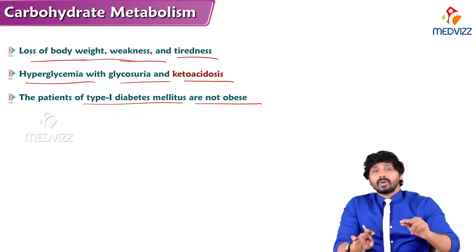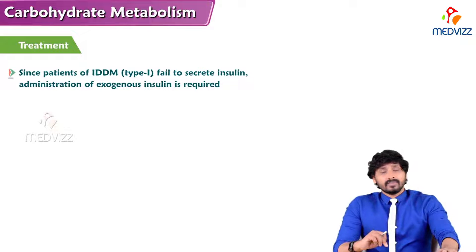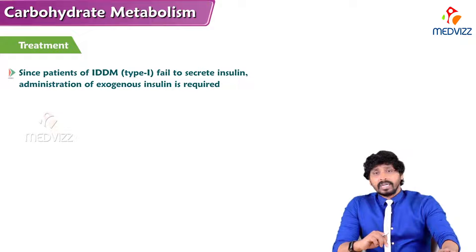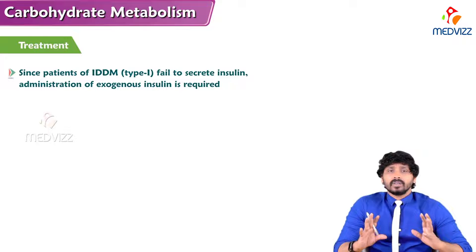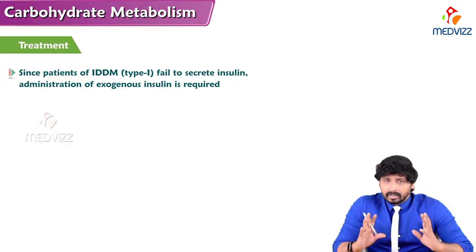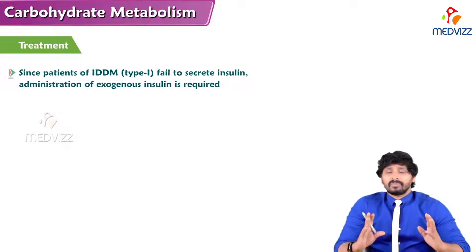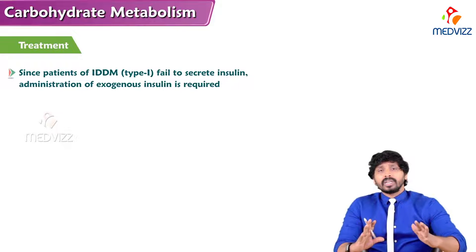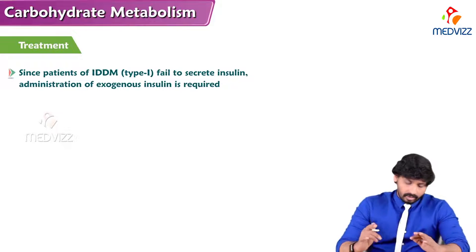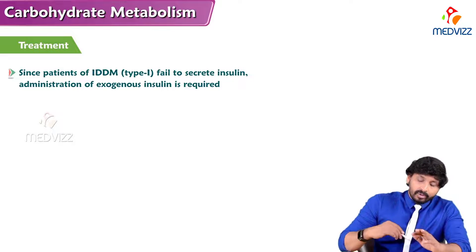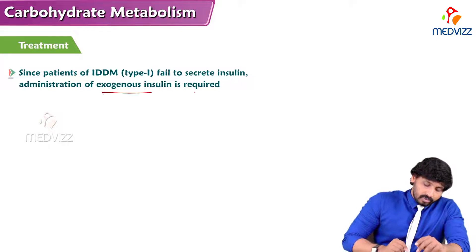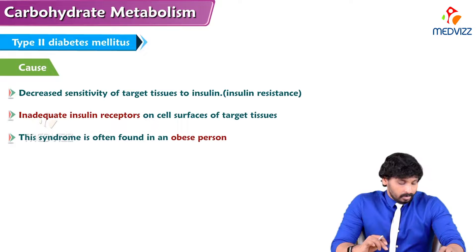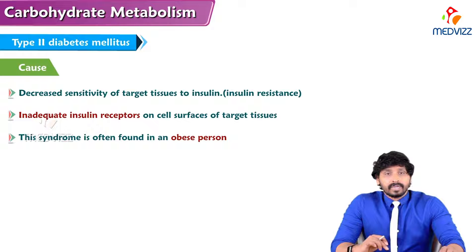Treatment: since Type 1 diabetes is insulin-dependent, persons suffering from Type 1 diabetes mellitus — including juveniles — are absolutely required to take insulin. As they fail to secrete insulin on their own, administration of exogenous insulin is required.